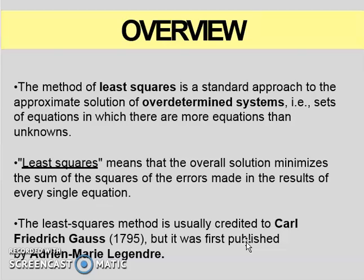The method of least squares is the standard approach to the approximate solution of an over-determined system — that is, a set of equations in which there are more equations than unknowns. The least squares solution minimizes the sum of the squares of the errors made in the result of every single equation. So when we calculate a solution for an equation, the sum of all the squares of errors is minimized.